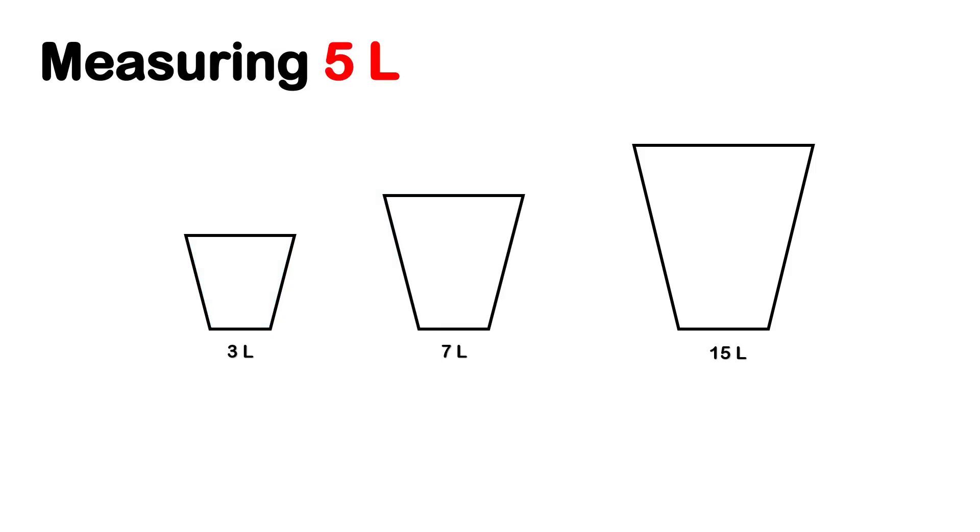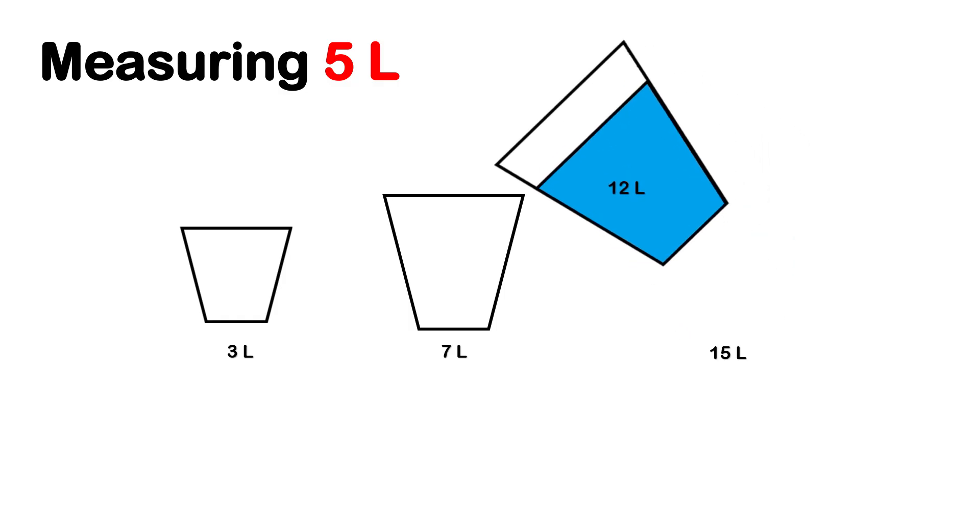Now let's move on to the real challenge. 5 liters. Here's how we can do it. First, fill the 3-liter bucket four separate times. Each time, pour it into the 15-liter bucket. Altogether, that gives us 12 liters. Next, use that water to fill the 7-liter bucket. 7 liters go in, and whatever remains in the big bucket is 5 liters. Exactly what we need.